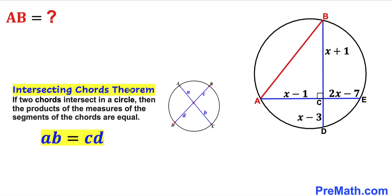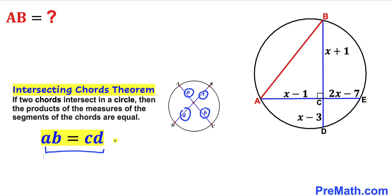Here's our very first step: let's recall the intersecting chords theorem. If two chords intersect in a circle, then the product of the measures of the segments of the chords are equal, as you can see in this diagram. We can see the product of these two segments: a times b equals c times d.